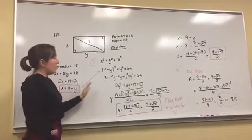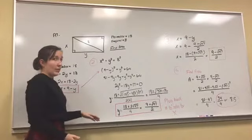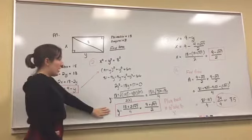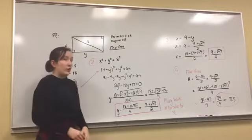Then you end up getting, after using the quadratic formula, if yours is in factor, you end up getting that y is equal to 9 plus or minus square root of 47 over 2.